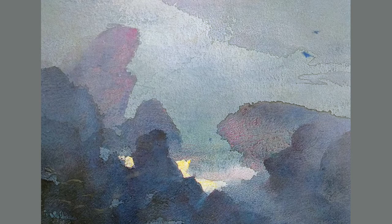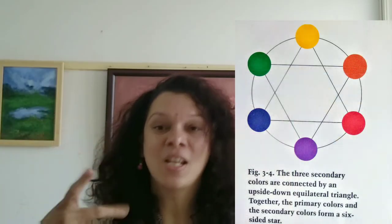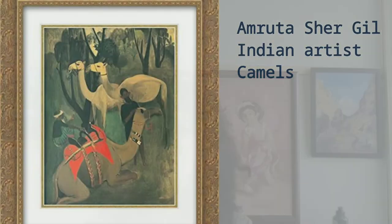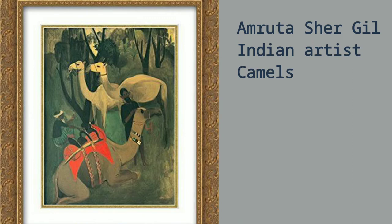Now we have this color wheel with three complementary pairs: red-green, blue-orange, and yellow-violet. See this beautiful painting by Indian artist Amruta Shargit, titled 'Camels.' See the beautiful compositional arrangement — red and green are used. It is not necessary to use both colors in a pair with great vibrancy.